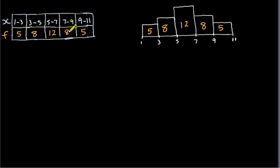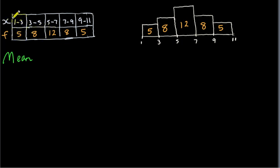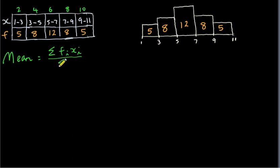This is a frequency distribution table of a perfectly symmetric histogram. Let's look at the mean of it. As explained in previous videos, we use mid-interval values. The middle of each interval gives us values of two, four, six, eight, and ten. We calculate the mean by summing the product of f_i times x_i and dividing by the sum of the frequencies.